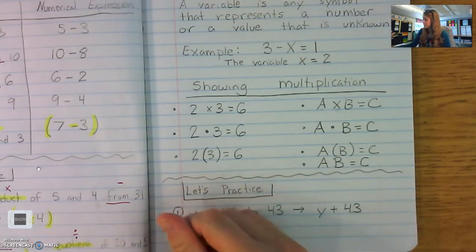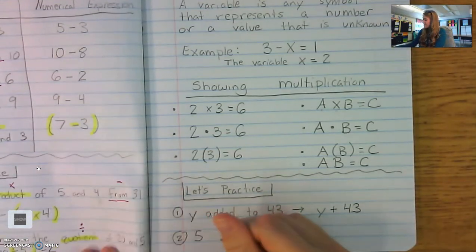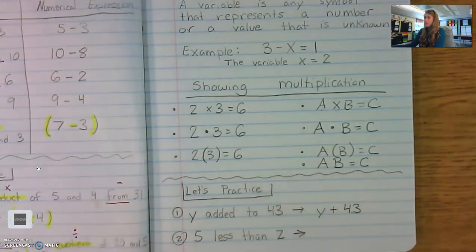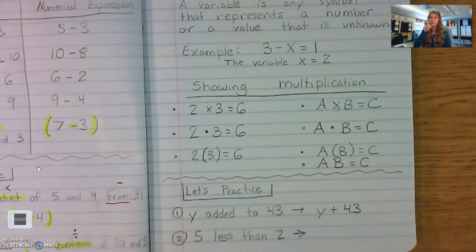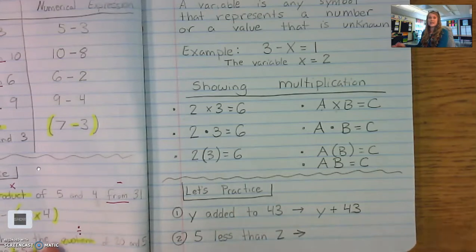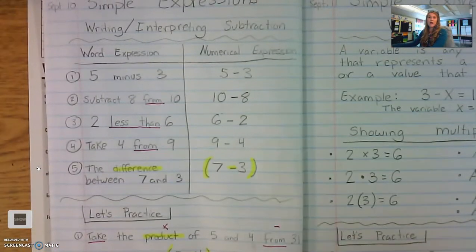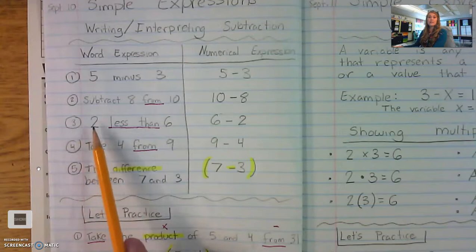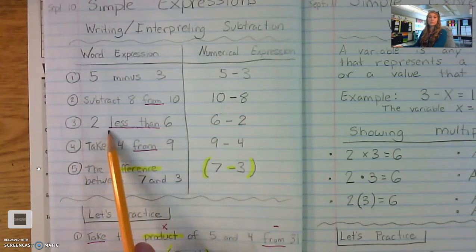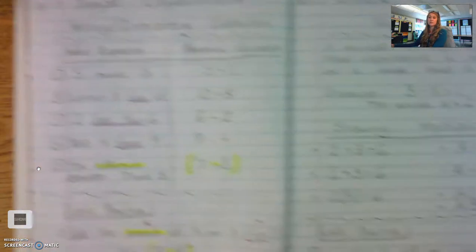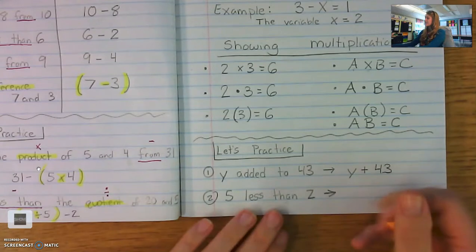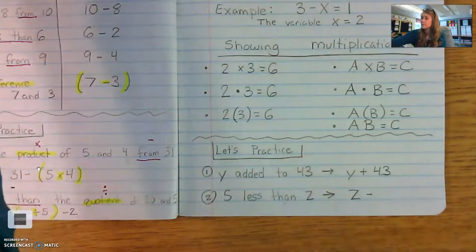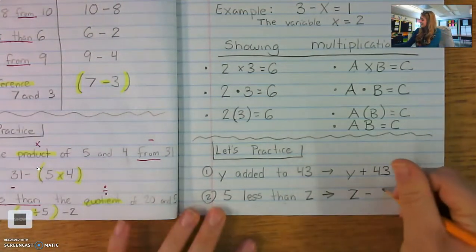What about five less than z? How would we write that one? Well, do you remember our notes from yesterday? Less than brings us over here to our subtraction chart where we see when we hear less than our mind needs to say flip the order, flip the order. Two less than six became six minus two. So five less than z becomes z minus five.